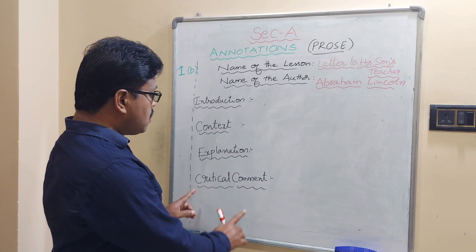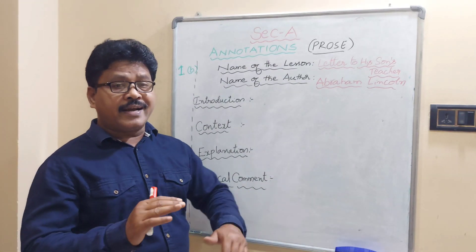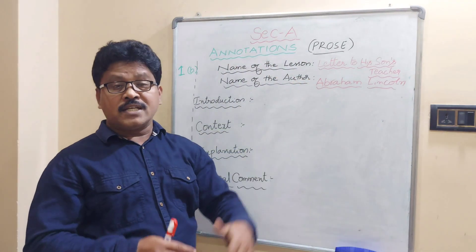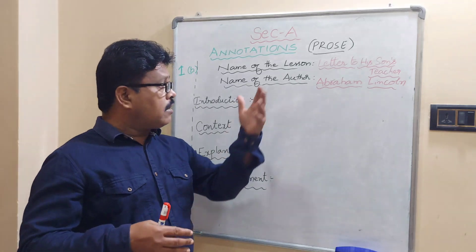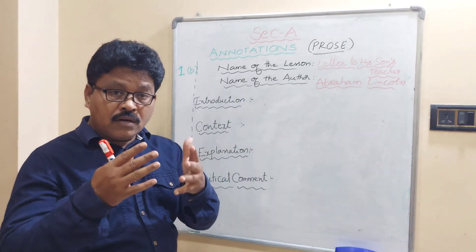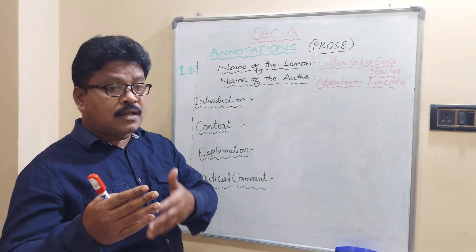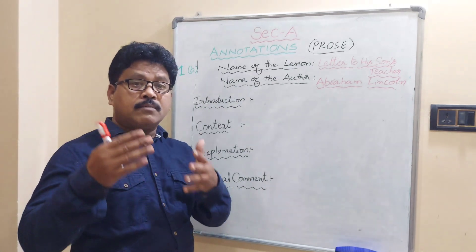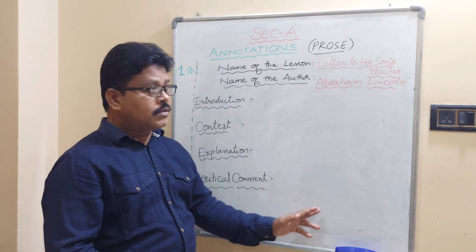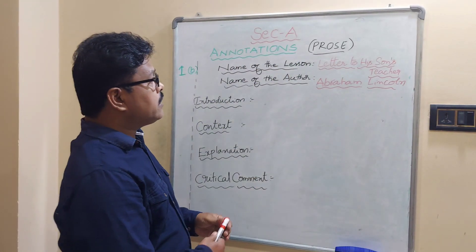In Critical Comment, you give your opinion — how you are rating the lesson, how you are rating the author, what the moral of the lesson is, what the author's style is, and what you learned from the lesson. You become the critic here and write your critical comment. This is the way of writing annotations for prose.